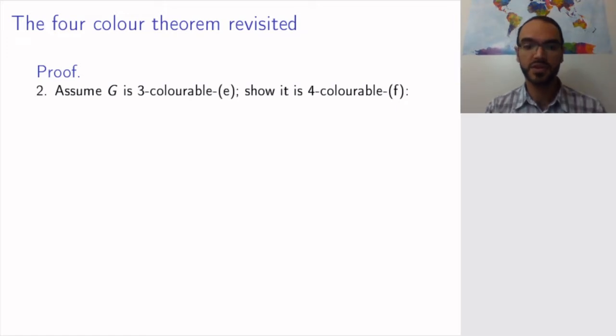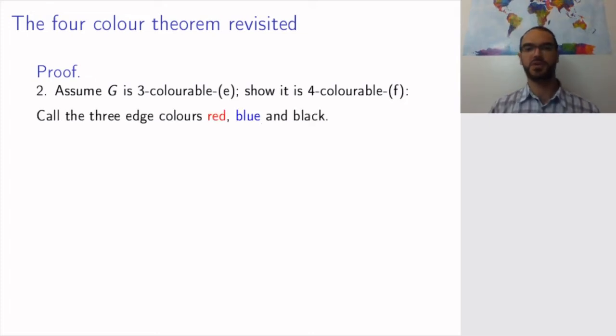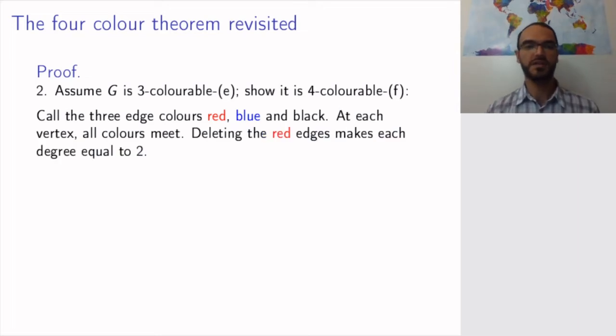Now, let's prove the other direction, which is a bit more intricate. So, assume now that the edges are colorable in 3 colors, and we need to show that the faces are 4-colorable. So, now let's call the 3-edge colors red, blue, and black. And at each vertex, because the vertex degree is 3, all the colors will meet. So, what we're going to do is we're going to delete the red edges.